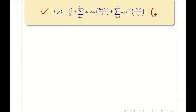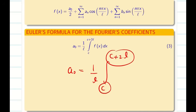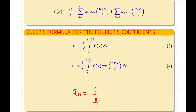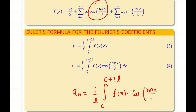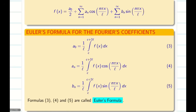We can write f of x in general in the interval c to c plus 2l where a naught, a n, and b n are represented as follows. A naught is 1 by l, integral from c to c plus 2l of f of x dx. A n is 1 by l, integral from c to c plus 2l of f of x cos(n pi x by l) dx. Similarly, b n is 1 by l, integral from c to c plus 2l of f of x sin(n pi x by l) dx. This is called Euler's formula for Fourier coefficients.